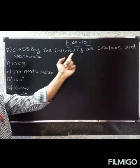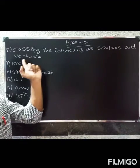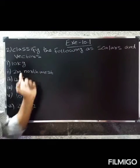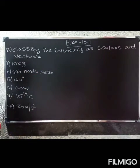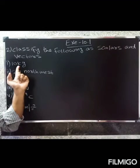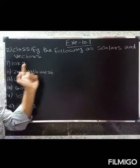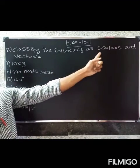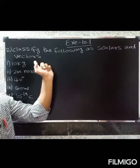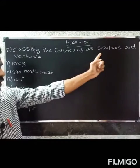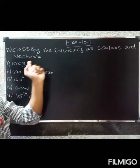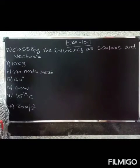Classify the following as scalars and vectors. Scalars are quantities with magnitude only, and vectors are quantities with both magnitude and direction.